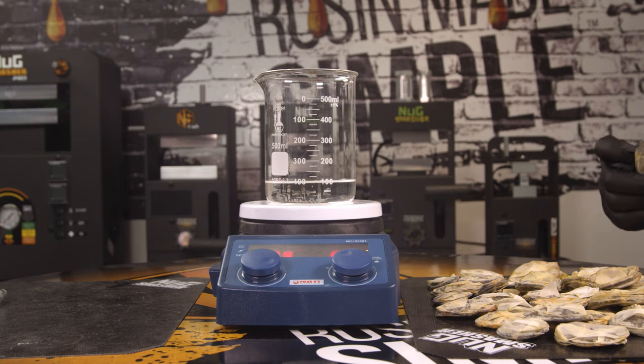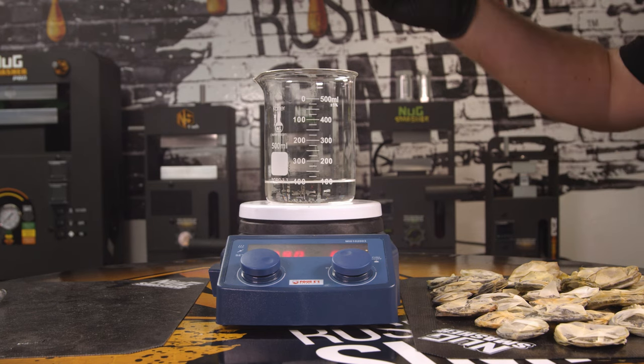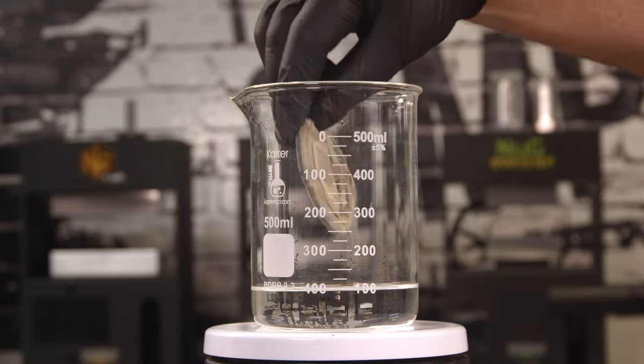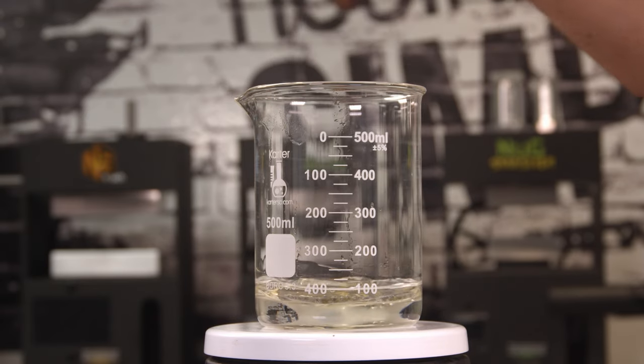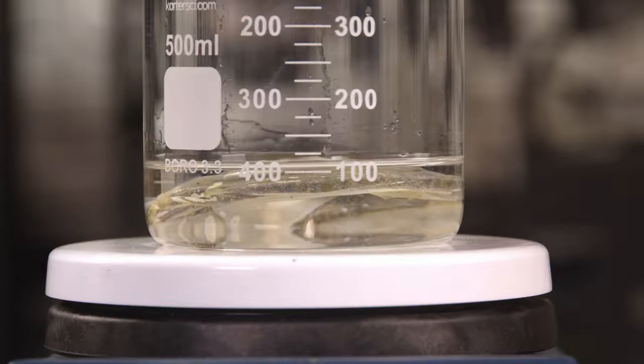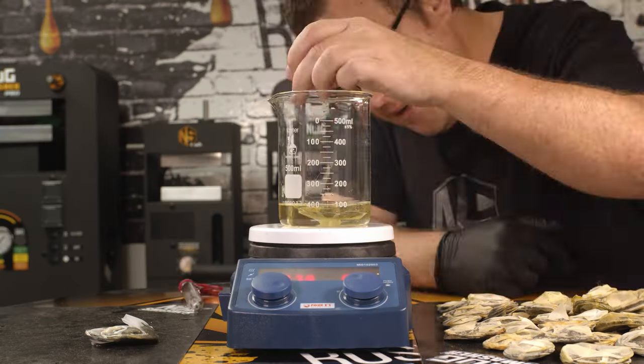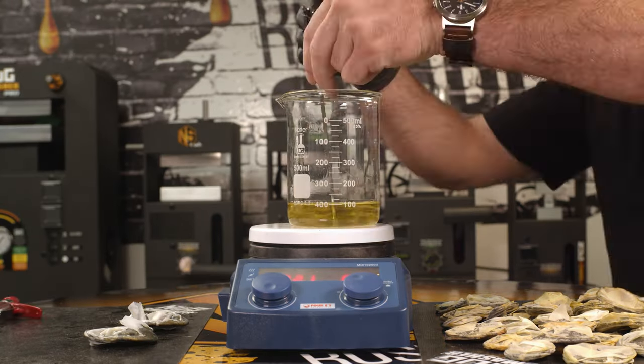We're going to turn our beaker up to low heat, we're going to add one puck at a time and cook them for about five minutes. Once the time's up, we'll pull the puck out, squeeze whatever remaining oil is within the puck and toss the puck aside and repeat the process. This oil is going to be really strong.